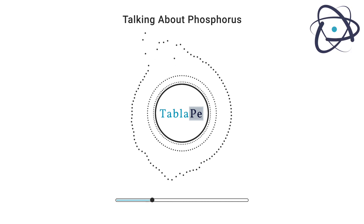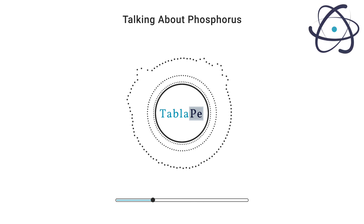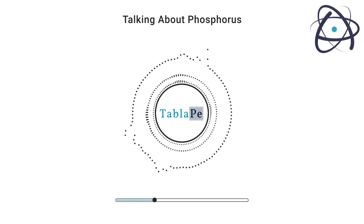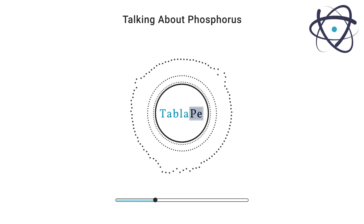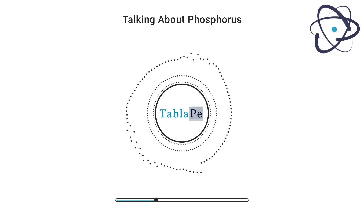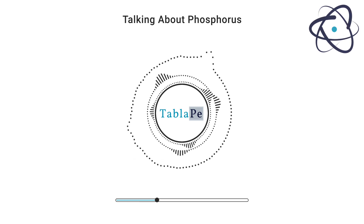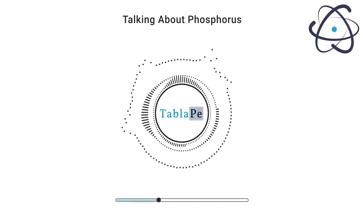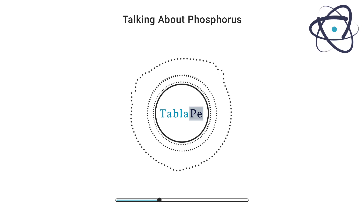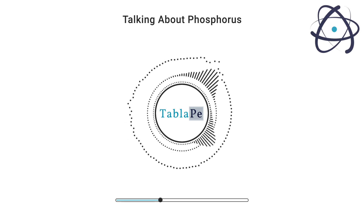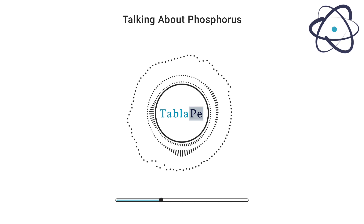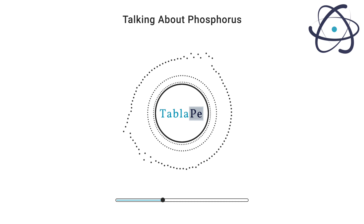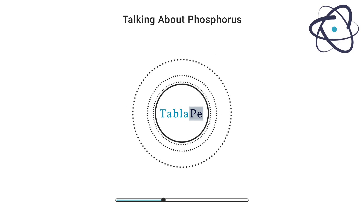Phosphorus is often found in phosphate form. During the 12th century, Arabian alchemists may have discovered elemental phosphorus by accident, though other chemists might have discovered it at the same time. The first confirmed discovery of phosphorus was made in 1669 by German physician Hennig Brand. He was interested in the properties of urine and tried to create philosopher's stone. He boiled urine with sand and charcoal to produce a vapor, then condensed the vapor in water, thereby discovering elemental phosphorus.